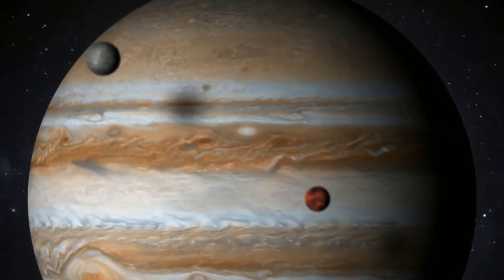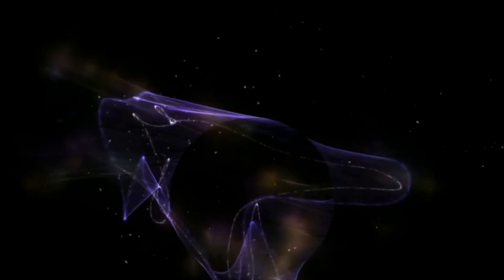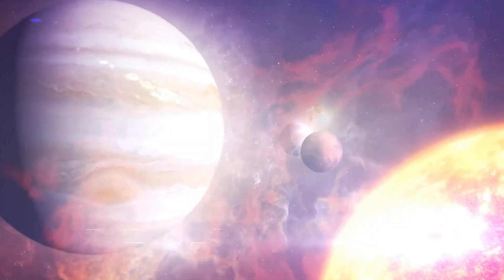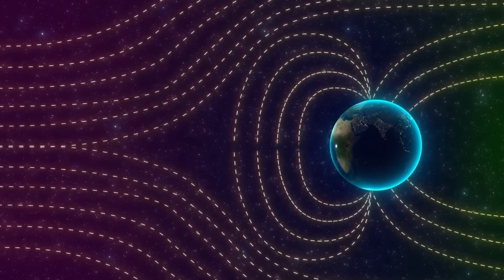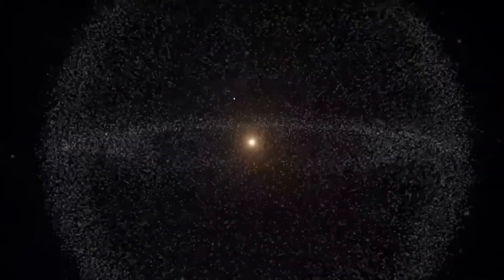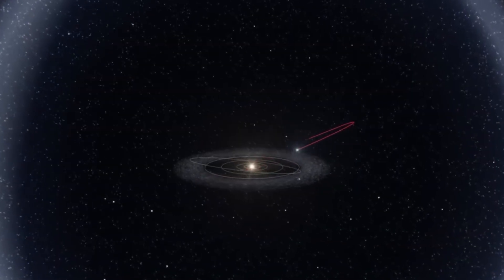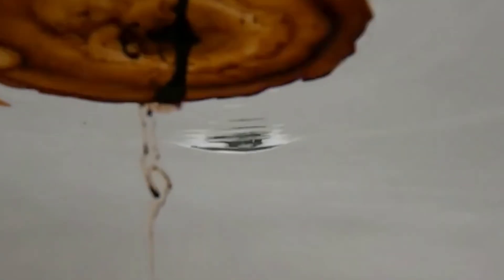If the reality of our solar system's orbital plane shocked you, what's lurking above and below that plane will leave you questioning everything. The scientific establishment has conveniently focused your attention on the tiny sliver where planets reside, while remaining suspiciously quiet about the vast spherical structures that make up most of our solar system's actual volume. Let's start with the Oort Cloud, a massive spherical shell that completely surrounds our solar system in all directions. This isn't some minor feature - it extends between 50,000 to 100,000 astronomical units from the sun.